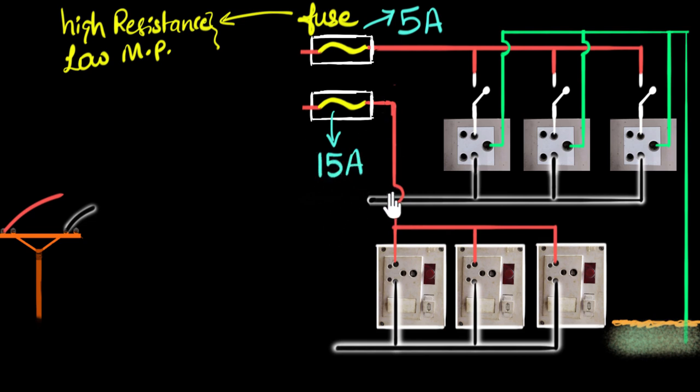So anything above 15 amperes, then that fuse will melt. So in our houses, we will have two independent circuits. One is five amps, and another one is 15 amps.